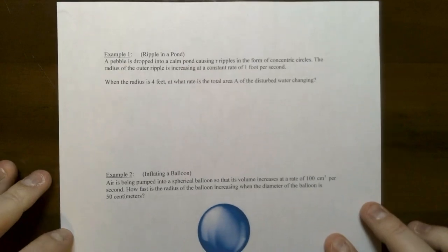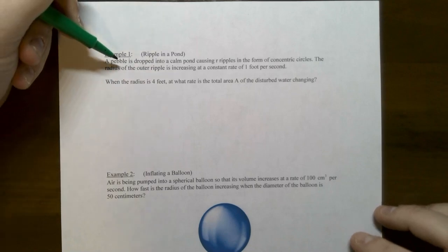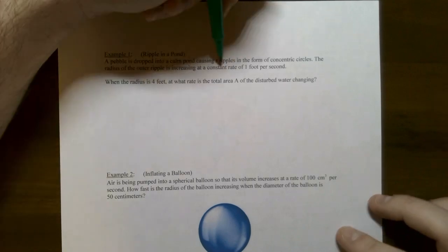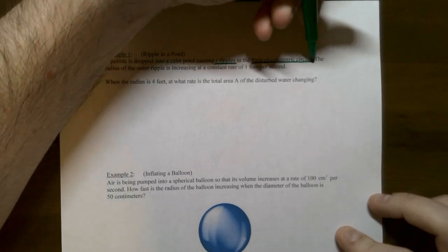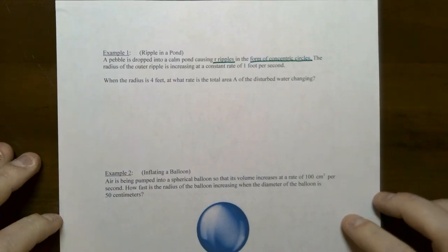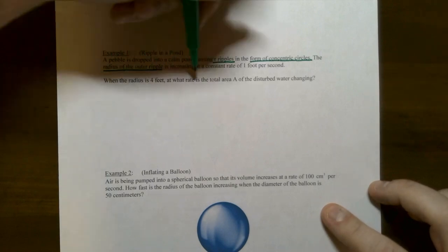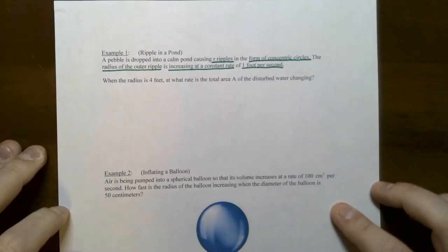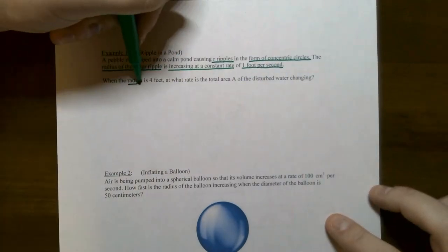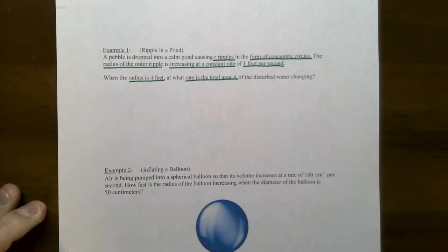Let's jump in and do two very quick examples of related rates — these are very common problems to start off with. In example one, a pebble is dropped into a pond causing ripples in the form of concentric circles. The radius of the outer ripple is increasing at a constant rate of one foot per second. When the radius is four feet, what is the rate of change of the area of the disturbed water?